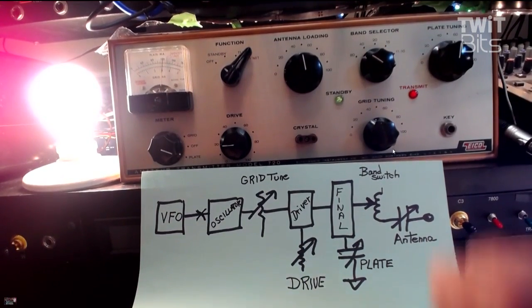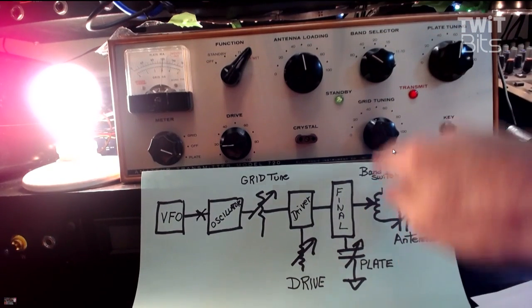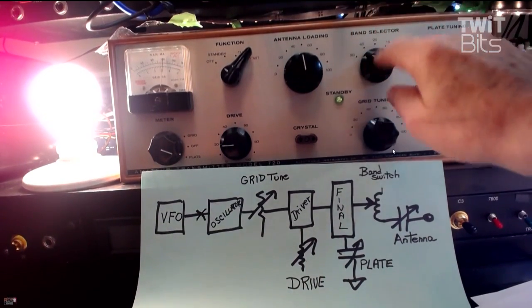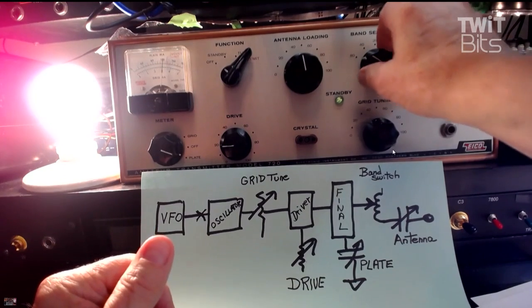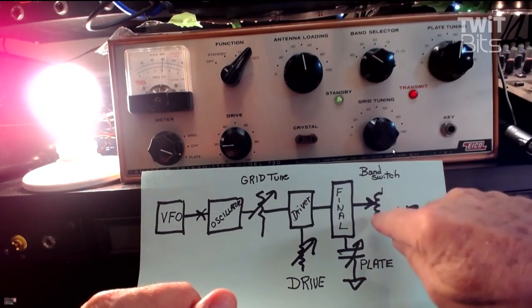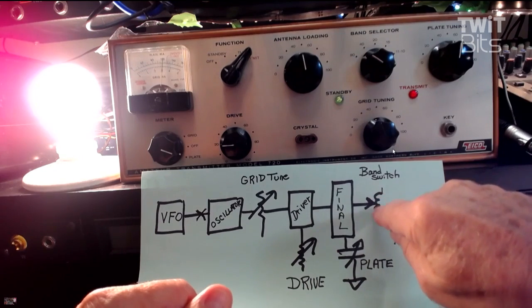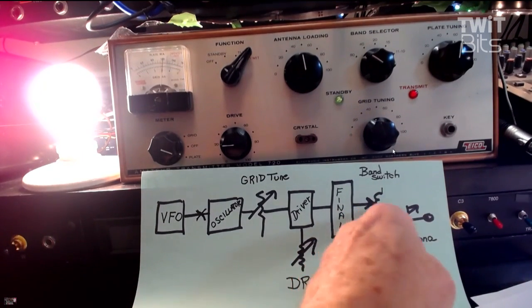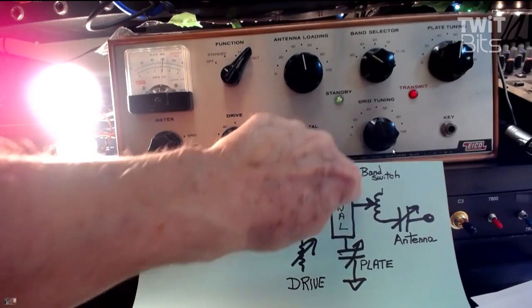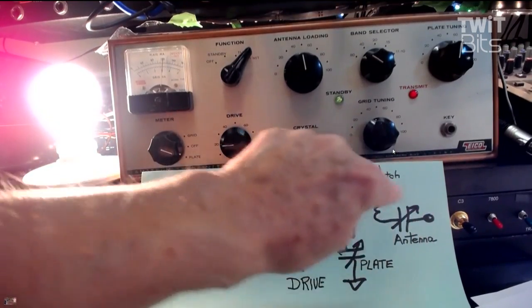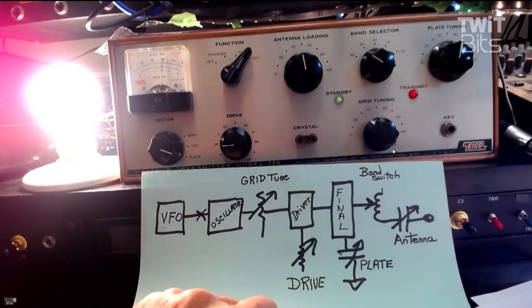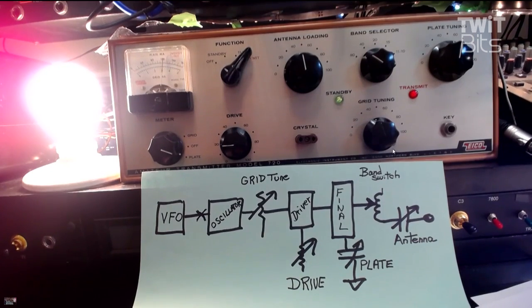Now, one thing I forgot to say in the beginning is we're going to set the band switch. We're going to put it on the band we want so the VFO is on there. Like a dummy, I should have told you that. But we're setting on 80 meters, 75 meters. And that band switch actually selects the taps on the coil that feeds the antenna. And of course, that's the final. That's all resonant. The final plate capacitor, the coil, and the antenna. That all has to be resonant. And that's how we do it. That's how you tune up a tube transmitter.